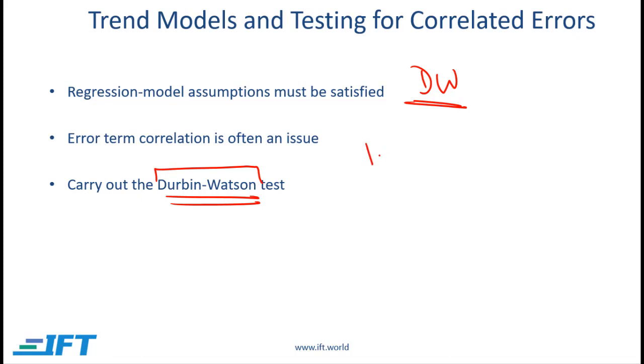Going back to what we did in the previous reading, the DW stat ranges between 0 and 4. If the DW stat is around 2, that means that there is no serial correlation or in other words the error terms are not correlated. If the DW stat is in this region, so closer to 0, then that means that we do have positive serial correlation and if the DW stat is in this region closer to 4, then we have negative serial correlation.